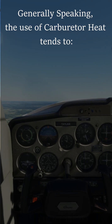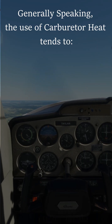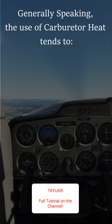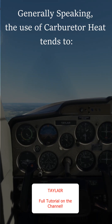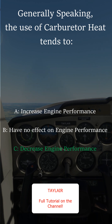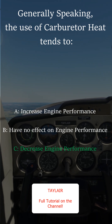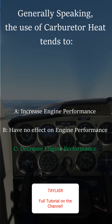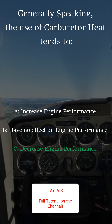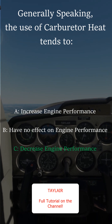It also enriches the fuel mixture, and this is why you see the reduction in RPM when the carb heat is turned on. It's important to ensure that the carb heat is turned off in situations where full power is required — for example, in takeoff and climb.